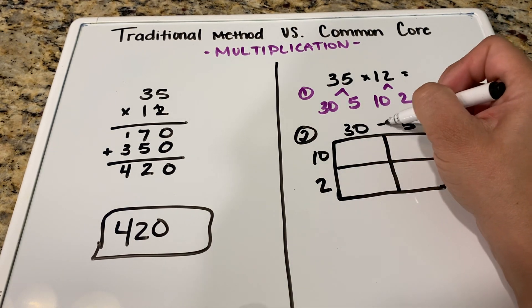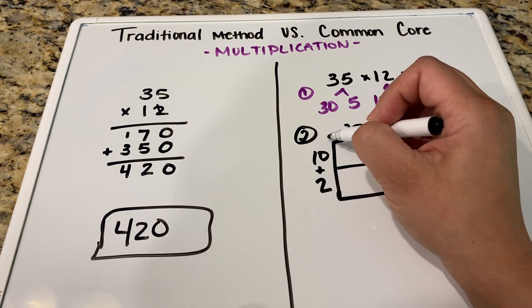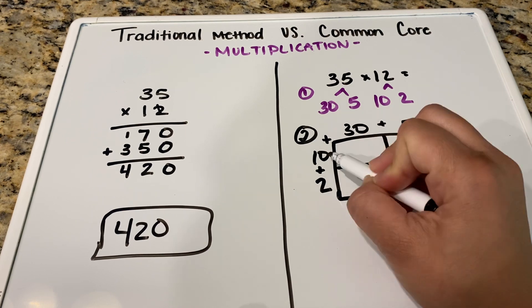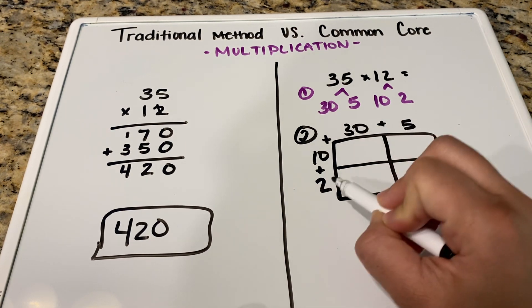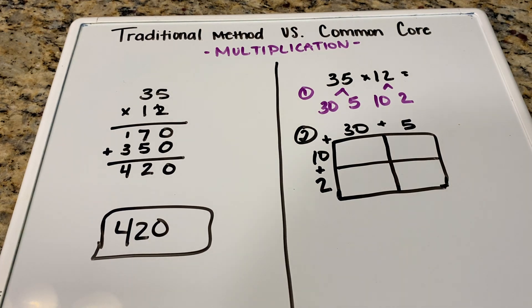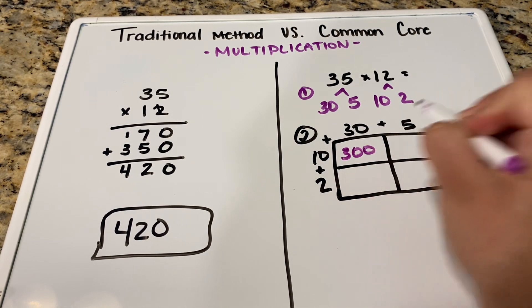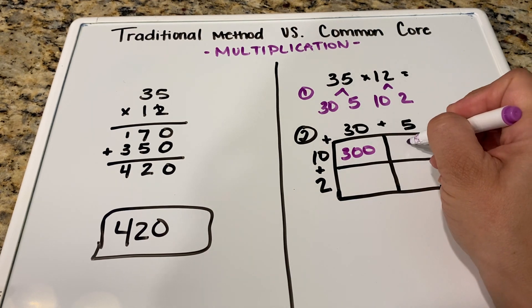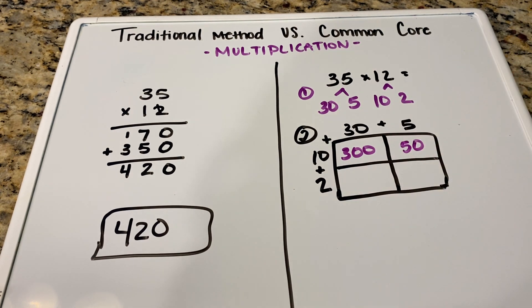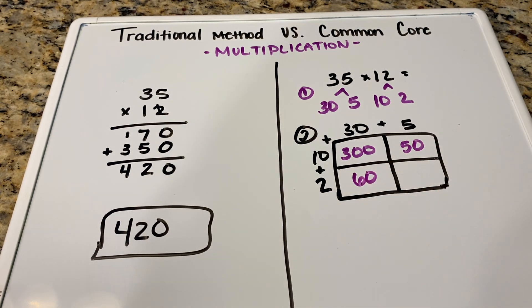And we're going to be adding everything at the end of the day. But it's still a multiplication problem. So we are going to be multiplying. So we're going to be multiplying our 10 to our 30 or 10 to our 5. Then we're going to be multiplying our 2 to our 30 and our 2 to our 5. So let's go ahead and do that. So 30 times 10 is 300. 10 times 5 is 50. 30 times 2 is 60. 5 times 2 is 10.